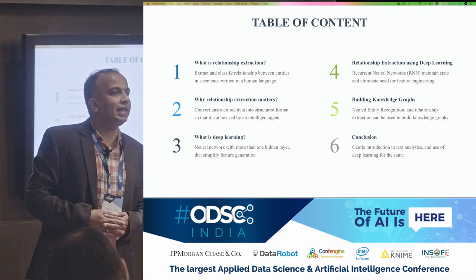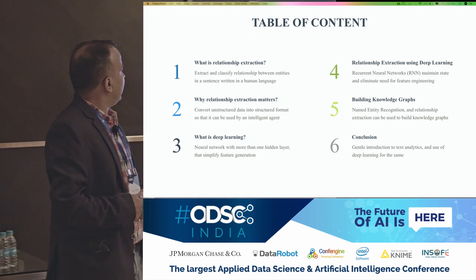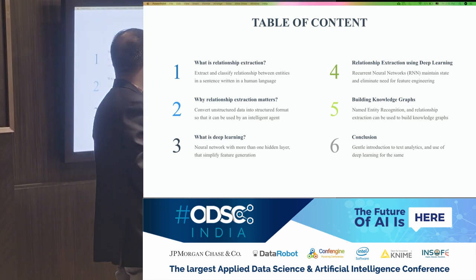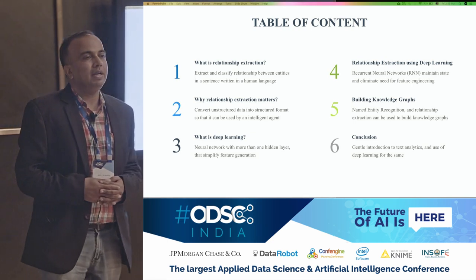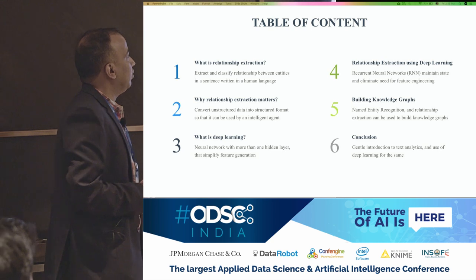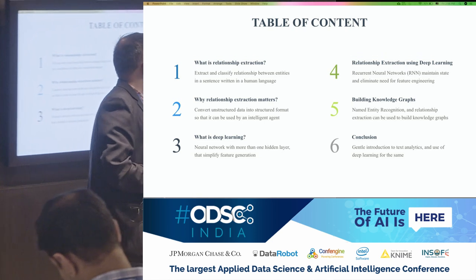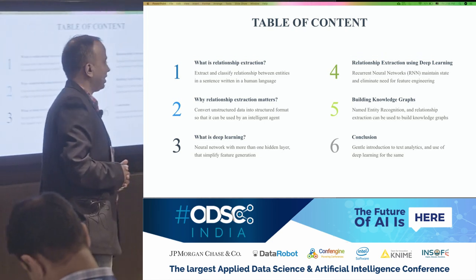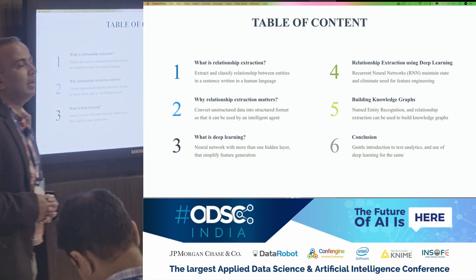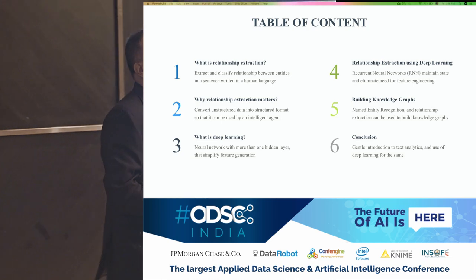Relationship extraction is required to move from software that can read text to software that can understand text. In this talk we are going to cover: why relationship extraction is important, deep learning and relationship extraction — in my opinion a match made in heaven — and how deep learning facilitates and simplifies the task of relationship extraction. At the end, if time permits, we will talk about how to build a knowledge graph using the concepts from the prior slides.